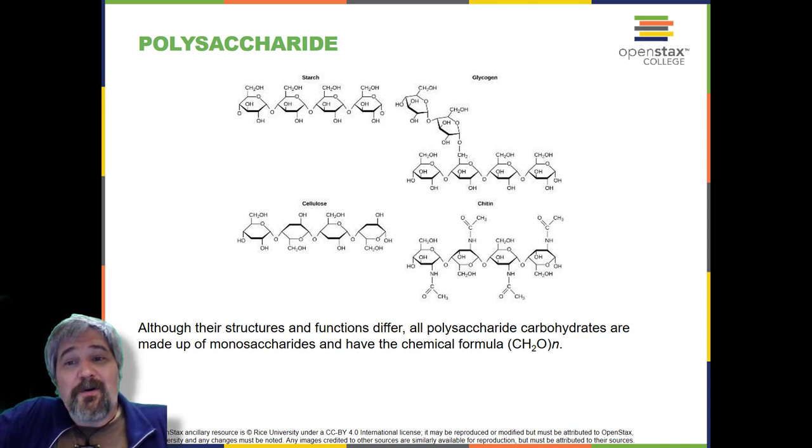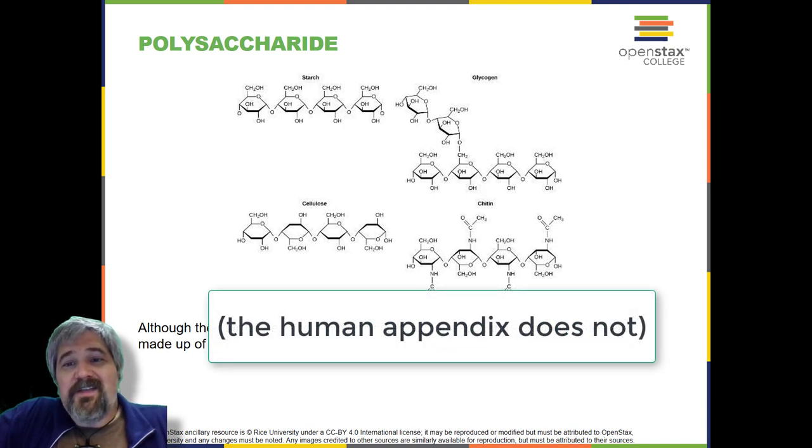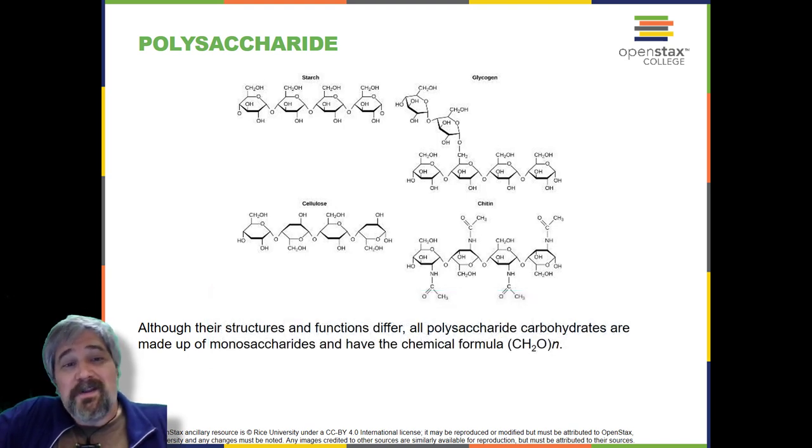Cellulose passing through our digestive system is called dietary fiber. While the glucose-glucose bonds in cellulose cannot be broken down by human digestive enzymes, herbivores such as cows, buffaloes, and horses are able to digest grass that is rich in cellulose and use it as a food source. In these animals, certain species of bacteria reside in the rumen, part of the digestive system of herbivores, and secrete the enzyme cellulase. The appendix also contains bacteria that break down cellulose, giving it an important role in the digestive system of ruminants. Cellulases can break down cellulose into glucose monomers that can be used as an energy source by the animal.